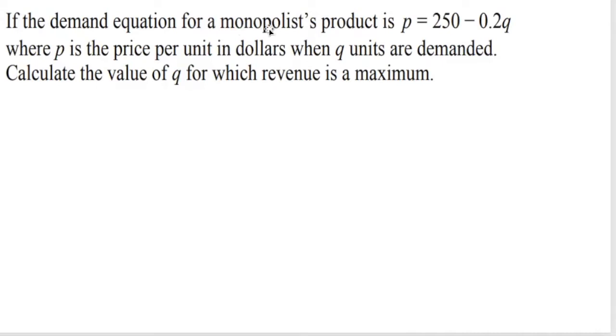Let's look at an example. If the demand equation for a monopolist product is P equal 250 minus 0.2Q, where P is the price per unit in dollars when Q units are demanded, calculate the value of Q for which revenue is a maximum.